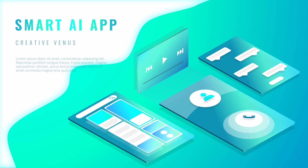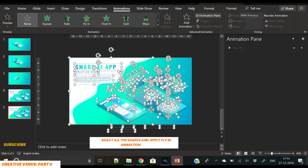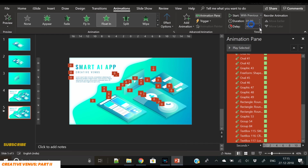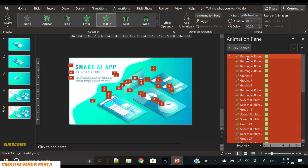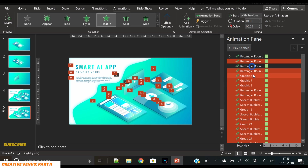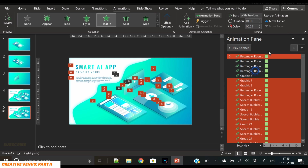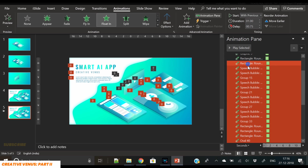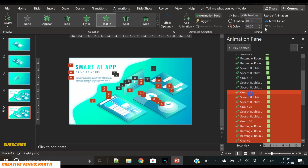Now comes the animation — here's a very cool trick. Select all items on the slide, select the Float In animation, and set Start With Previous with a delay of 0.25. While all items are selected, deselect four to five items and increase the delay. Repeat this process — keep deselecting three to five items and increasing the delay each time.